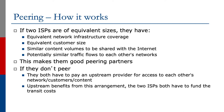As for peering, if two network operators are of equivalent sizes, they generally have equivalent network infrastructure coverage, equivalent customer size and numbers, similar content volumes to be shared with the internet, and potentially similar traffic flows to each other's networks. This makes them good peering partners, even if they are competitors trying to serve the same customer base. If they don't peer with each other, they both have to pay an upstream provider for access to each other's network, customers, and content. So the only one who benefits from this is the upstream provider, because they make money from the two ISPs funding the transit costs.